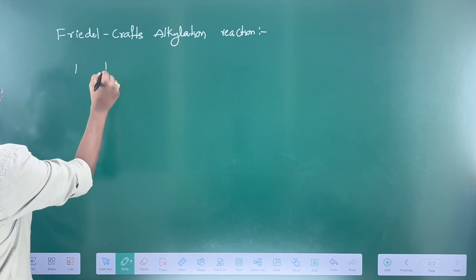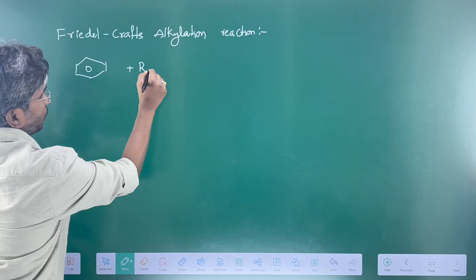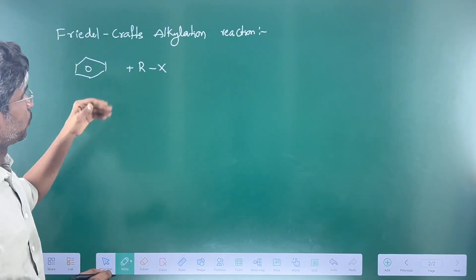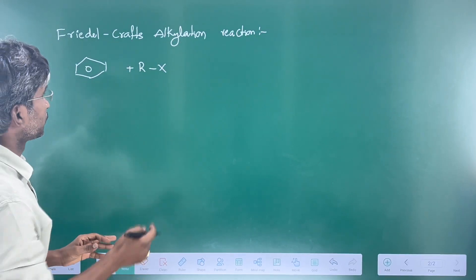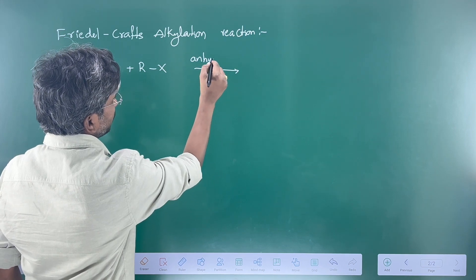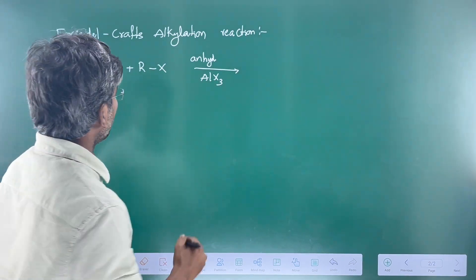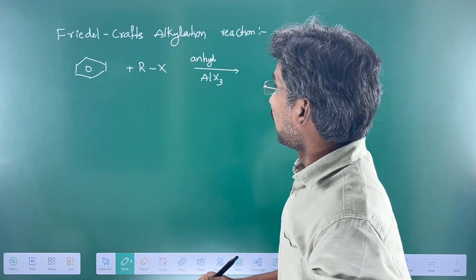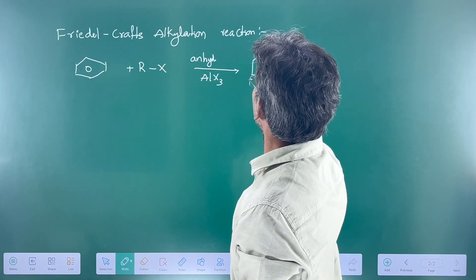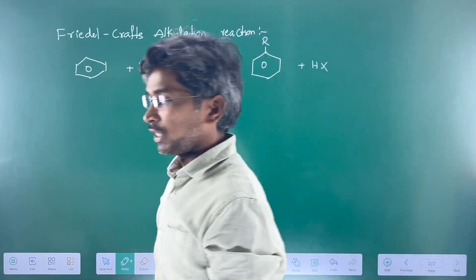What is Friedel-Crafts alkylation? It is the conversion of benzene into alkyl benzene in the presence of an alkyl halide — that is, an alkyl group; not only an alkyl group, any organic group we can take — in the presence of a Lewis acid. Conversion of benzene into alkyl benzene is known as Friedel-Crafts alkylation.